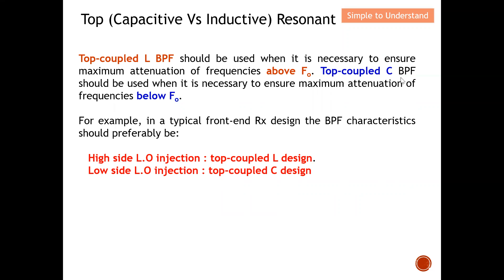Let's talk about some typical applications. In a typical front-end receiver design, the bandpass filter characteristic should preferably use a top-L coupled design when we have high-side LO injection, and a top-C coupled design when we have low-side LO injection. In the next video, I'll show some examples of how to calculate the top capacitive and top inductive resonant circuits. With that, please remember to like and subscribe — thank you so much, see you next time.